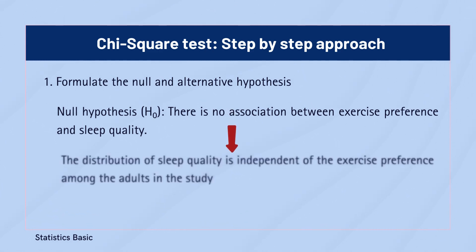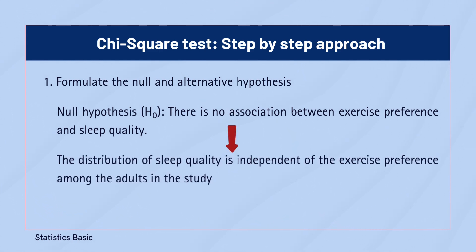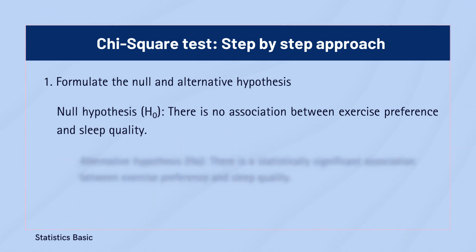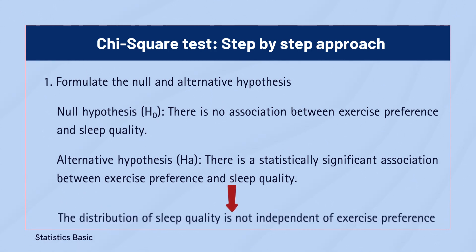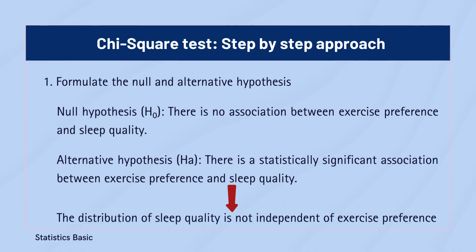In other words, the distribution of sleep quality is independent of the exercise preference among the adults in the study. The alternative hypothesis tests the claim that a statistically significant association exists between exercise preference and sleep quality. This suggests the distribution of sleep quality is not independent of exercise preference — there could be a difference in the proportions of people experiencing good, fair, or poor sleep across the three exercise categories.